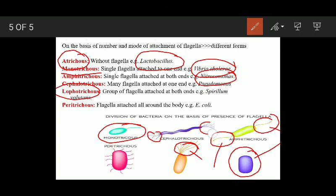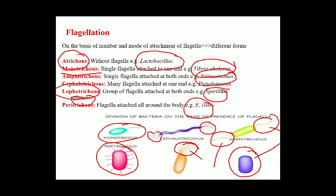When you have a group of flagella attached at both ends of the cell, this is known as amphilophotrichous or lophotrichous at both ends — the example is Spirillum volutans. Finally, peritrichous: in this type the flagella are uniformly distributed on the whole surface of the bacterial cell. The example is E. coli. This is all about the shape and flagellation patterns of bacteria — see you soon with a new lesson, stay blessed and thank you.